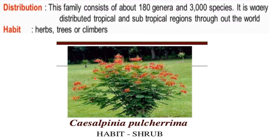One example of Caesalpinioideae is Caesalpinia pulcherrima. It is a herb. Now, for the distribution of this subfamily: it consists of about 180 genera and 3000 species. It is widely distributed in tropical and subtropical regions throughout the world.